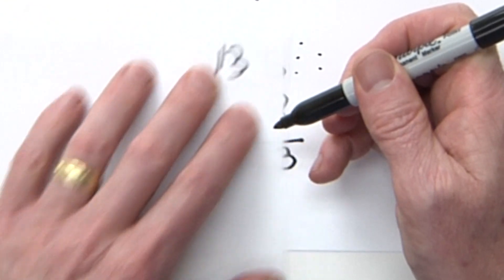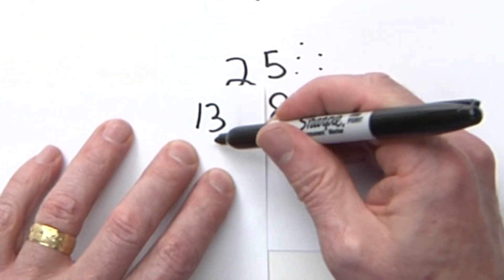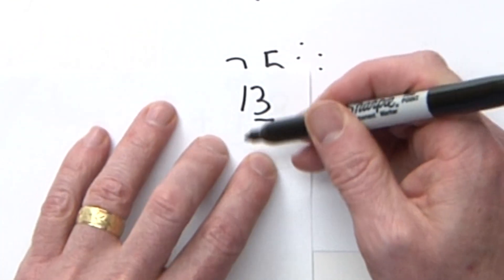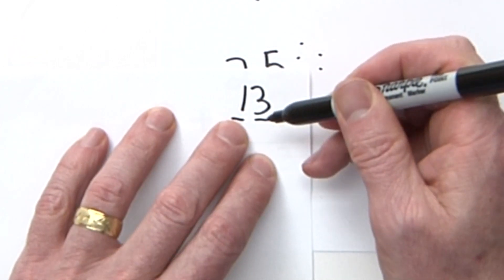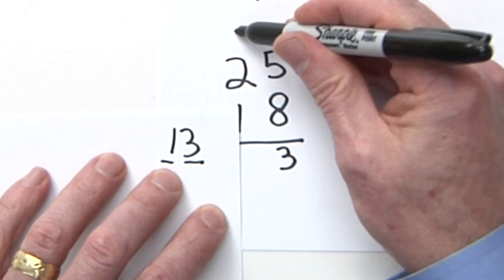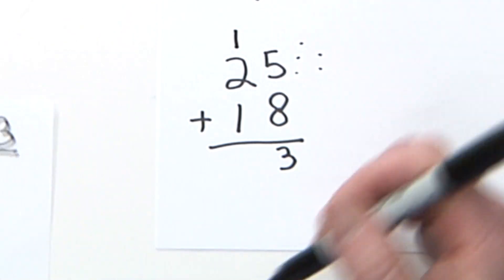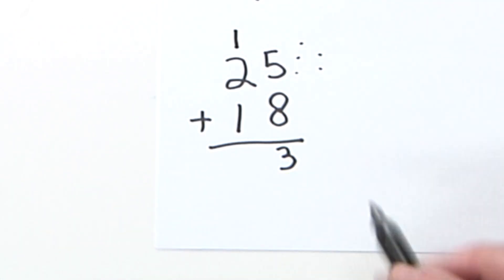Because this is the ones right here, and this is the tens place right there. So I want to put that 1 in the tens place, so I put it right here. Now I add the tens place, and if you get confused with all those numbers, you can cover it up like this.